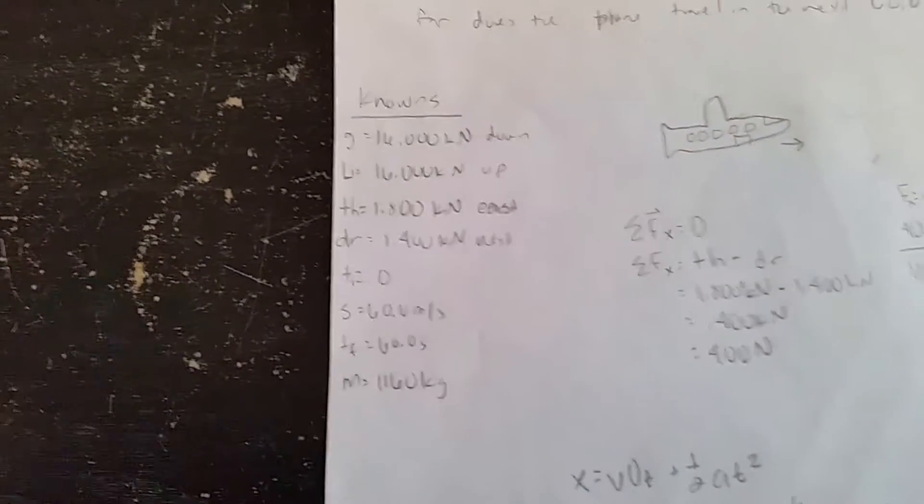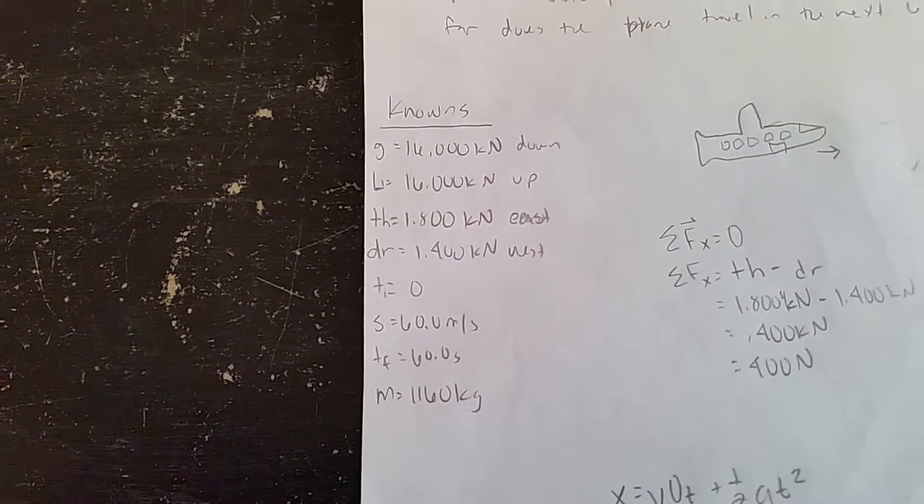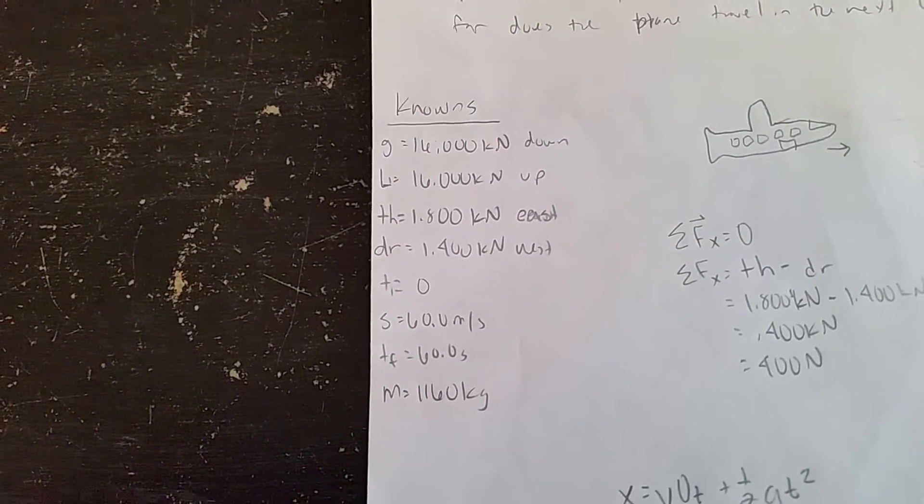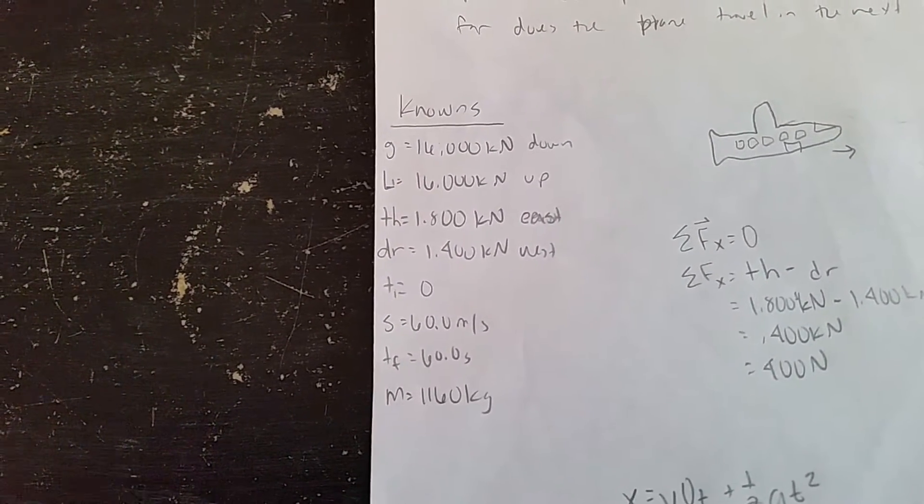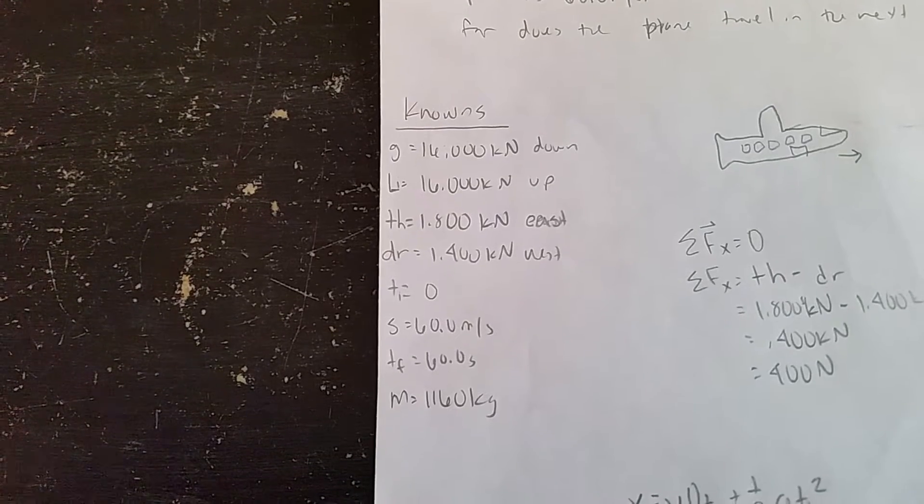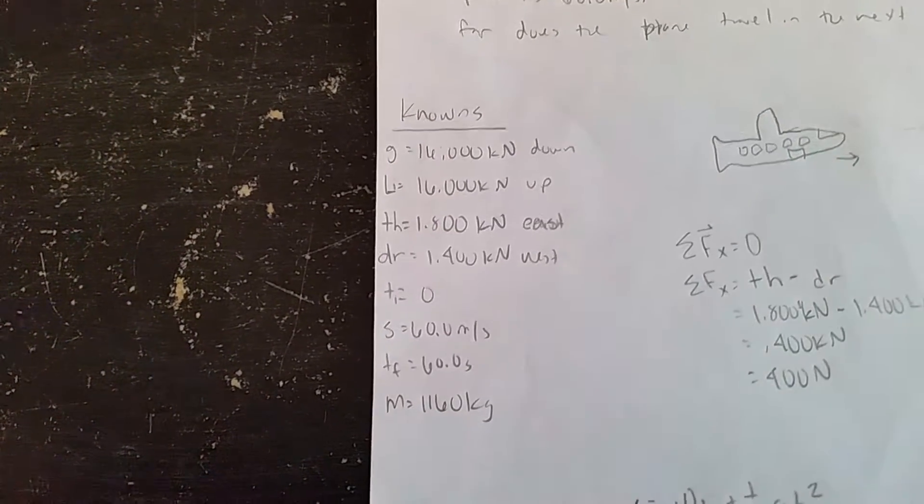So I wrote down my known values here: gravity 16 kilonewtons down, lift is 16 kilonewtons up, thrust is 1.8 kilonewtons east, drag is 1.4 kilonewtons west.